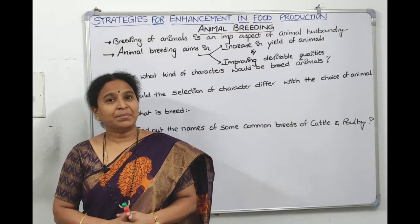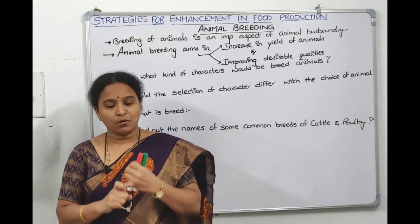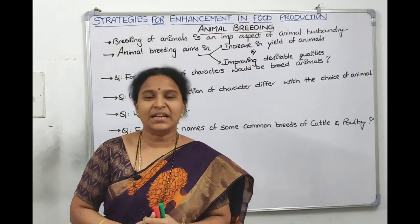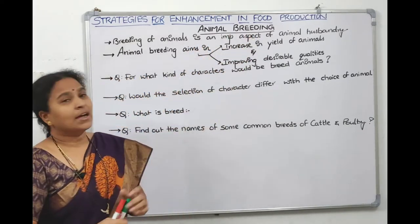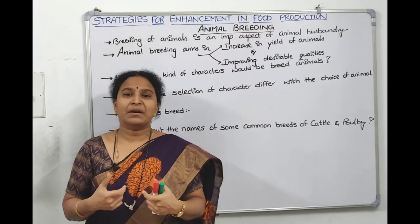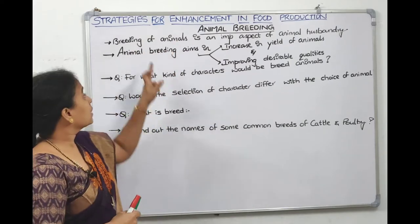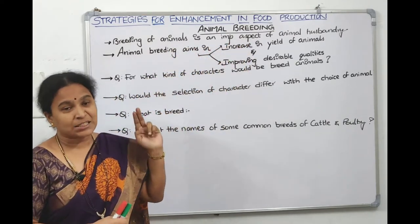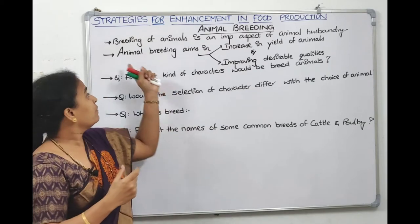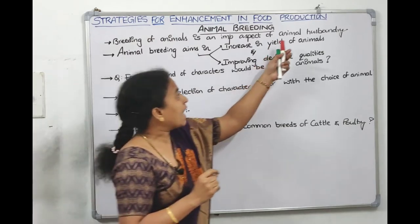Welcome everyone. We started the new chapter 'Strategies for Enhancement in Food Production.' In the first lecture we completed dairy farm management, in the second lecture we completed poultry farm management. Today's lecture will discuss the next topic: animal husbandry or animal breeding. Breeding between animals — between a superior male and superior female — comes under animal breeding, and it is an important aspect in animal husbandry because mating superior animals yields advanced characters in the progeny.